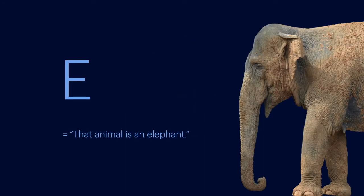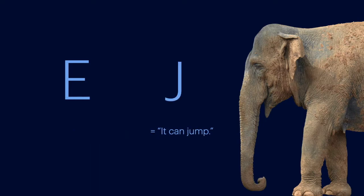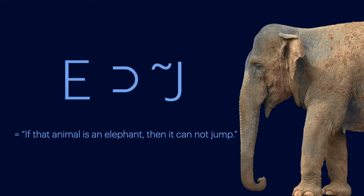The horseshoe stands for the conditional operator. Your textbook might simply use an arrow. The conditional operator forms IF-THEN sentences. Let's say E stands for, that animal is an elephant. And J stands for, it can jump. So, tilde J reads, it cannot jump. Put them together with the horseshoe and we get, if that animal is an elephant, then it cannot jump.